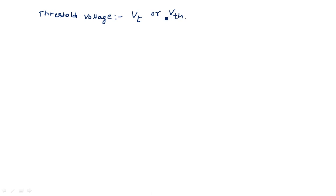What do you mean by threshold voltage? When a transistor is considered, it is either in an on state or off state. We determine the status of the transistor by the application of input voltage. If you are giving 5 volts to the input of an NMOS transistor, then we can say the transistor is in on state. If we are giving 0 volts, then the transistor is said to be in the cutoff region.